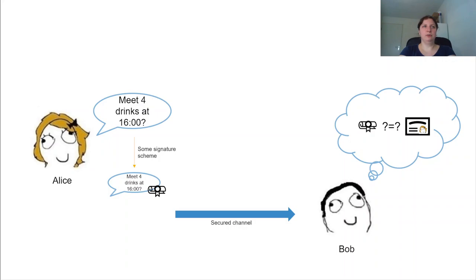she signs it with some signature scheme. She then sends the result along a secure channel to Bob and Bob can take this signature and verify it against Alice's certificate to make sure that the message really came from Alice and not some other person.